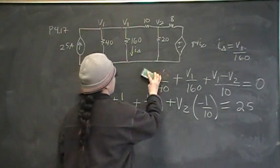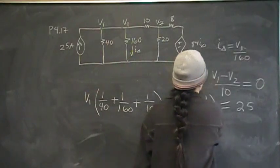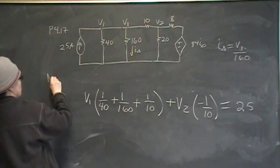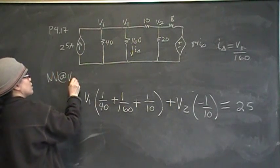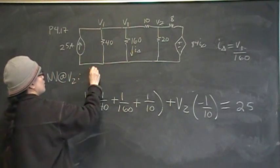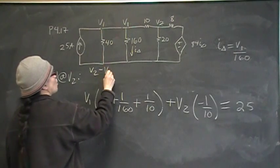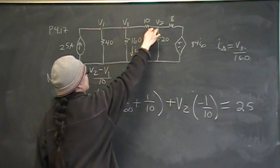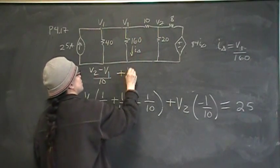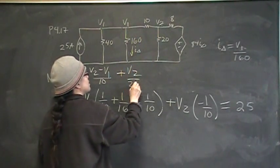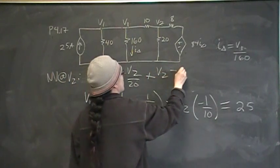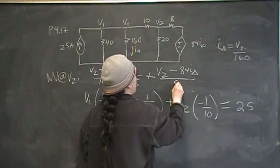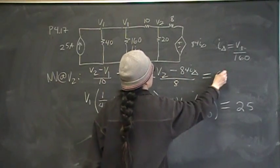Now I'm going to write my nodal equation at V2. So node voltage at V2 gives me V2 minus V1 over 10, that one there, now I need this one, plus V2 over 20, plus V2 minus 84I delta. That's over 8, and that's equal to 0.